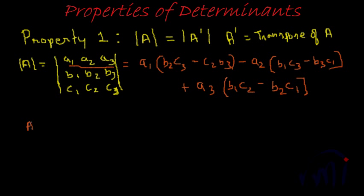Now, what is A transpose? If you remember from our series on matrix, A transpose would be the rows and columns getting interchanged, which means this will become A1, A2, A3, B1, B2, B3, C1, C2, C3. So this gives us determinant of A transpose.